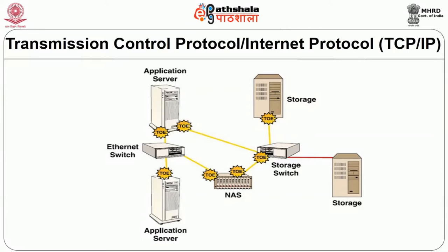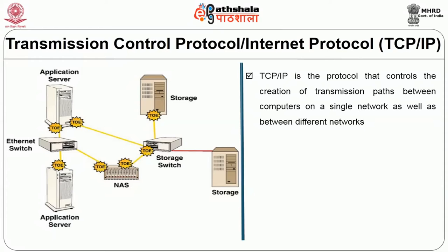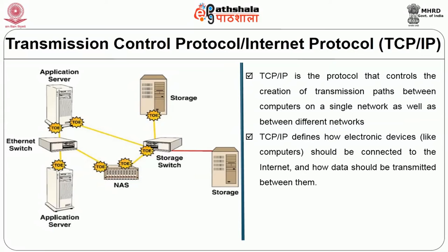Looking at a diagram on the screen, it shows an application server, storage, Ethernet, NAS, and various devices — with application server and storage in two different locations connected to various devices. TCP/IP is the protocol that controls the creation of a transmission path between computers on a single network and different networks. TCP/IP defines how electronic devices like computers should be connected to the internet, how data should be transmitted, and is used as a universal protocol for public networks and many local area networks.